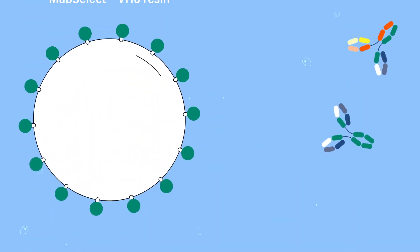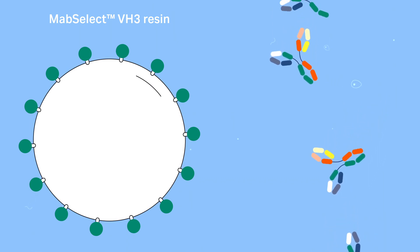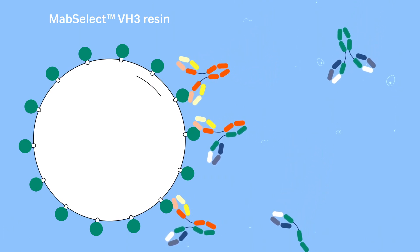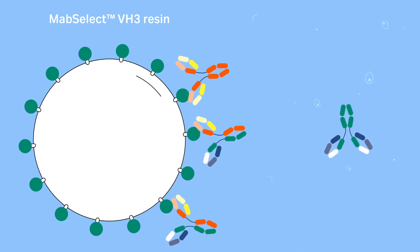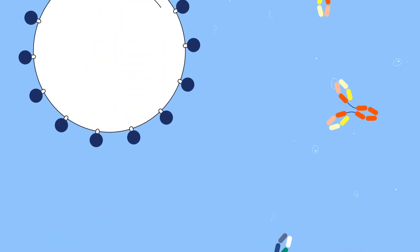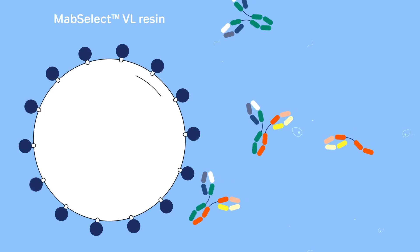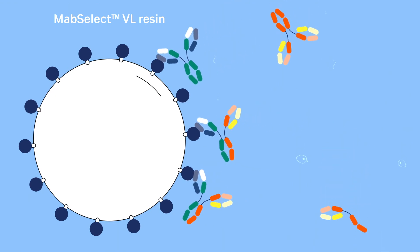Or use MAB Select VH3 Protein A resin. It has a specific interaction with the VH3 domain. You can use the resin to separate mispaired versions by differences in avidity. Or if your target antibody contains a kappa light chain, you may want to use MAB Select VH3 protein L resin.